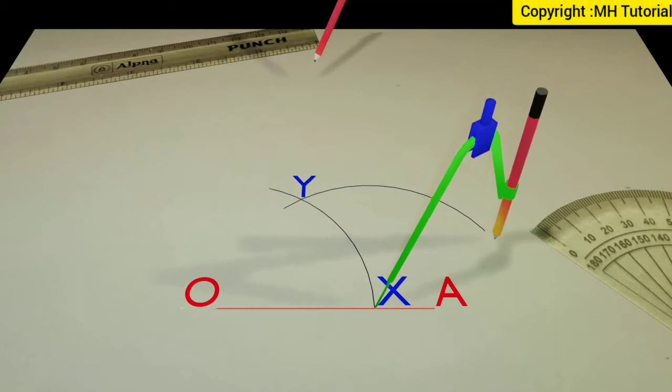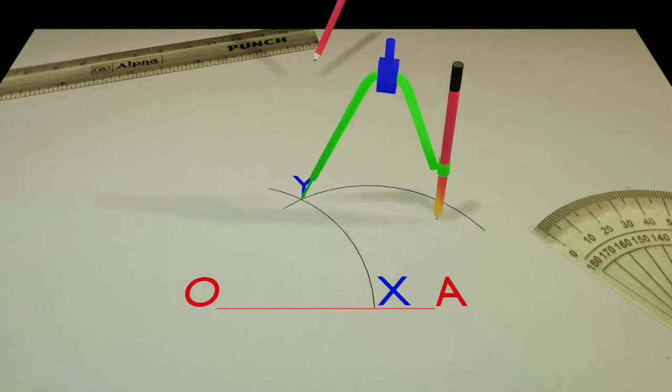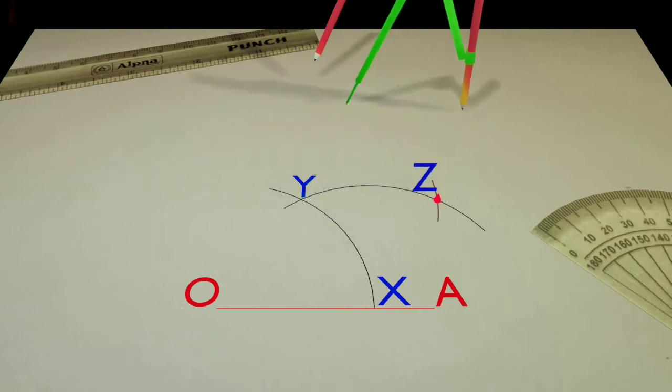After that, put the tip of the compass at point Y and draw a circle arc of same radius to get an intersection against the second circle arc. This point of intersection is point Z.